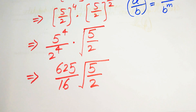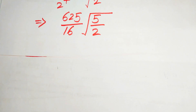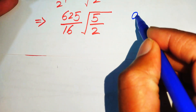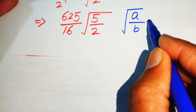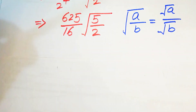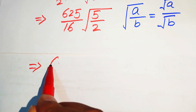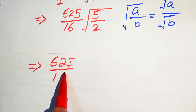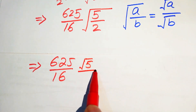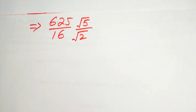To write this in more simplified form, we apply the radical law: the square root of a over b equals the square root of a divided by the square root of b. We break the square root separately onto both terms, writing it as 625 over 16 multiplied by the square root of 5 divided by the square root of 2.